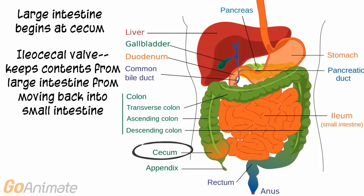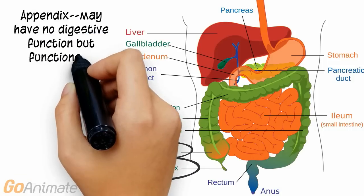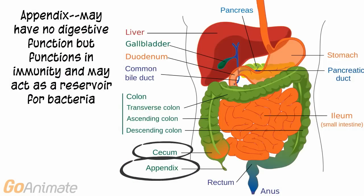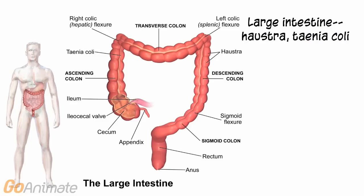The large intestine begins at the cecum. There is a valve between the ileum and cecum called the ileocecal valve, which keeps contents of the large intestine from moving back into the small intestine. The cecum contains the appendix. The appendix may have no digestive function but functions in immunity and may act as a reservoir for bacteria.